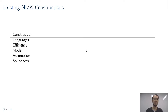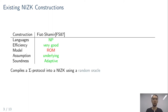So what are existing constructions and why do we need another one? First, there were results showing that non-interactive zero-knowledge exists for all of NP, but these generic constructions use expensive NP reductions and don't yield efficient zero-knowledge. The first efficient construction was the Fiat-Shamir transformation from 1987, which compiles a sigma protocol into a NIZK using a hash function modeled as a random oracle, yielding very efficient non-interactive protocols almost as efficient as the underlying sigma protocol.